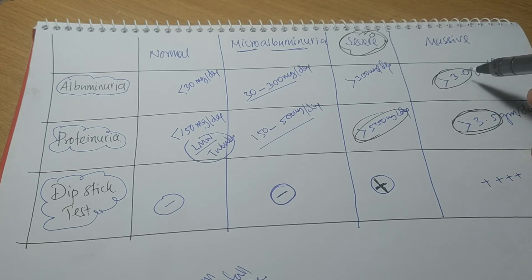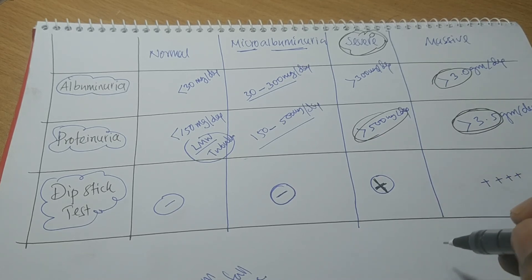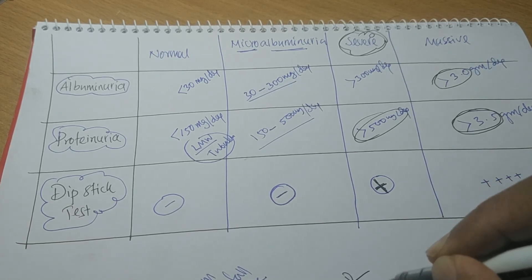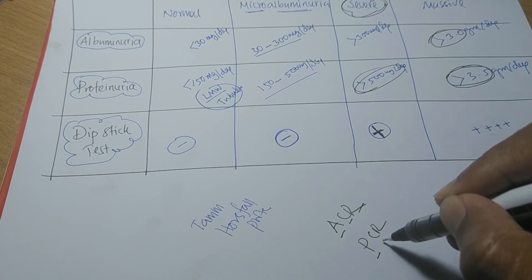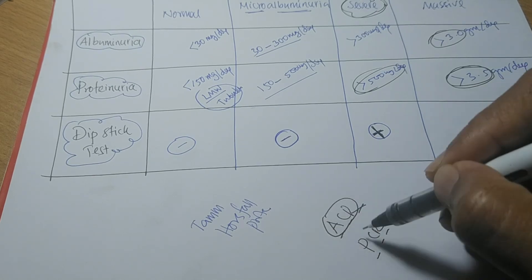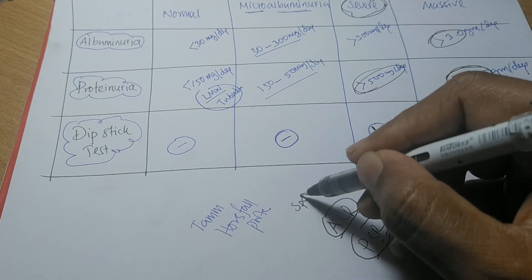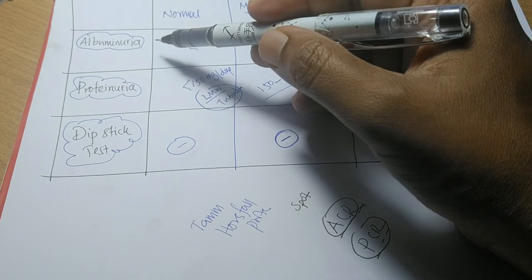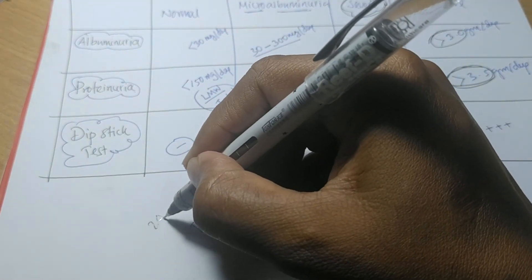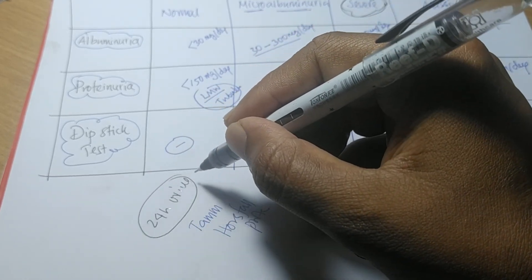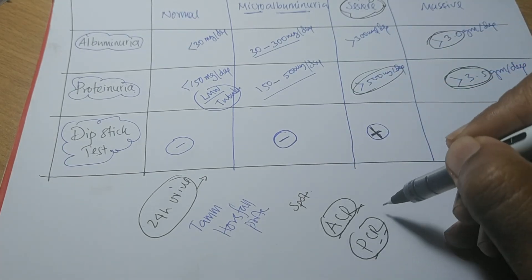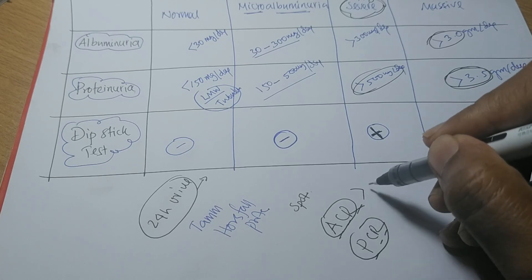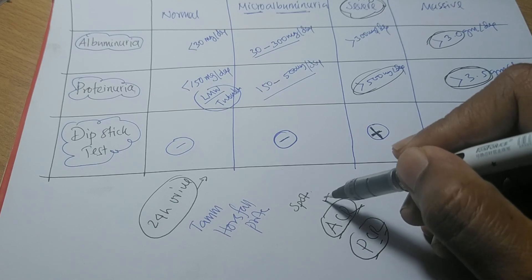To detect total protein or total albumin in spot urine, there are tests called ACR and PCR — albumin-to-creatinine ratio and protein-to-creatinine ratio. These can be detected on a single spot urine sample. To detect total proteinuria and total albuminuria by conventional methods, the patient needs to collect 24-hour urine, which can be cumbersome and inaccurate. To avoid this problem, ACR and PCR are better options. ACR is sometimes better than PCR, but ACR requires a very sensitive assay technique and can be expensive.